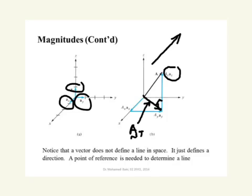In order to define a line, you need a point of reference, as we will talk later about position vectors.